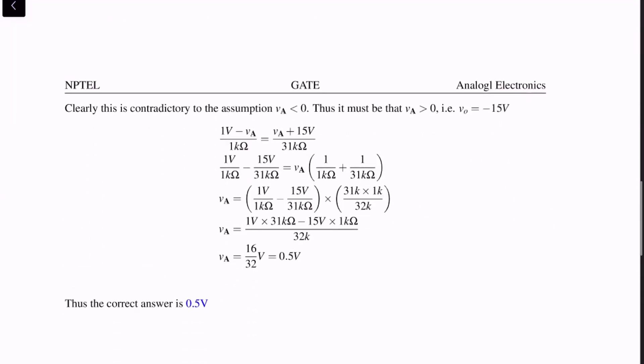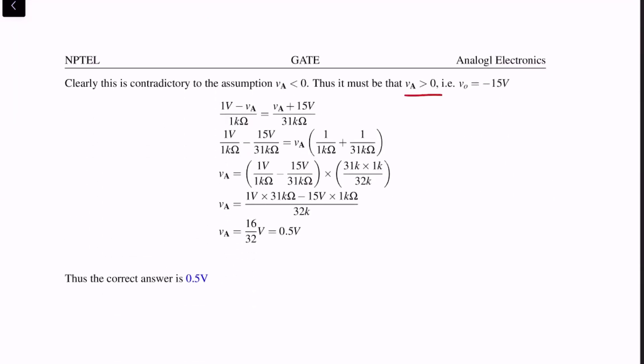So we are therefore left with only that Va is greater than 0, which of course means that Vout is minus 15 volts by identical logic to before. Replacing Vout as minus 15 volts and solving further, you will find that Va comes out as 0.5 volts. Thus the correct answer is 0.5 volts.